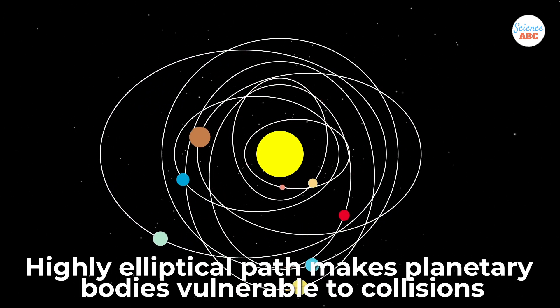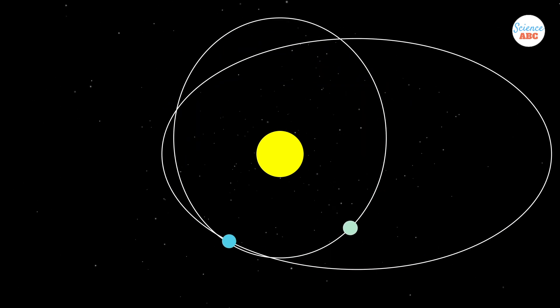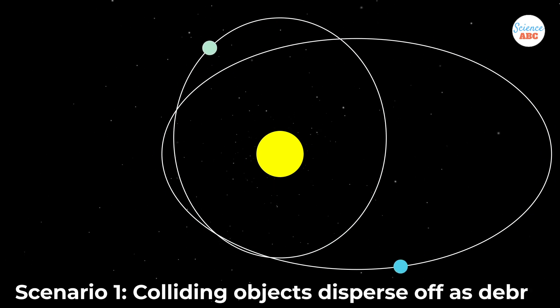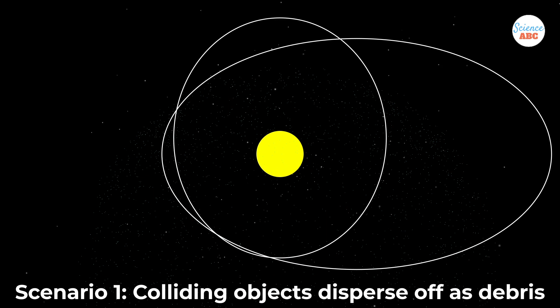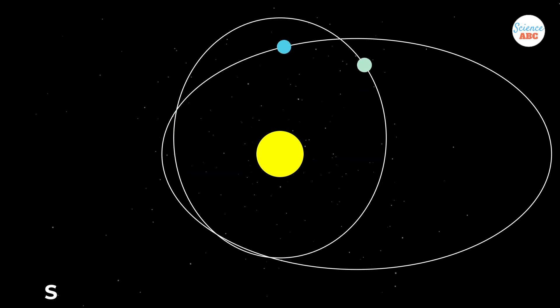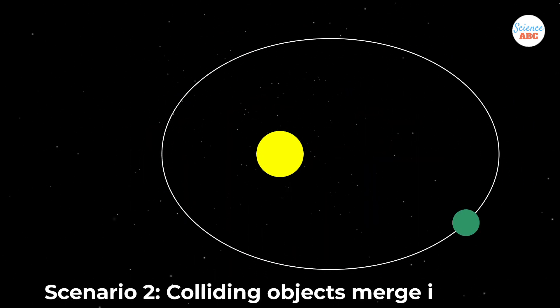In short, this makes planetary bodies more susceptible to collision and impact. In the aftermath of an impact, a couple of things could happen. One is that both the colliding objects could break and disperse off into pieces, or they could simply merge into a single larger entity.